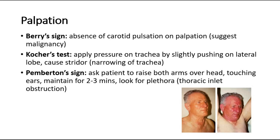Next is Kocher's test, where we apply pressure on the trachea by slightly pushing on the lateral lobes. A positive Kocher's test is when there is stridor — noisy breathing — which suggests narrowing of the trachea.